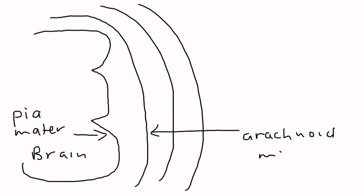So this part is the brain, and then this layer that covers the brain is called the pia mater. This layer here is the arachnoid mater, and then this here is the dura mater. And then this layer here is just the skull.